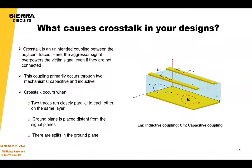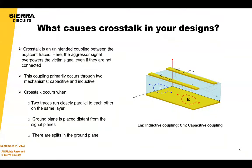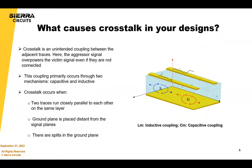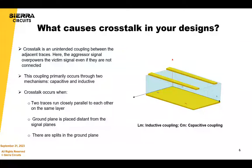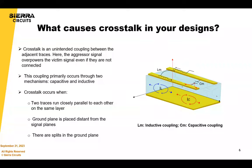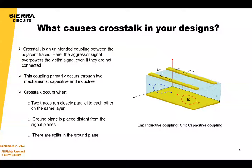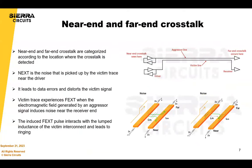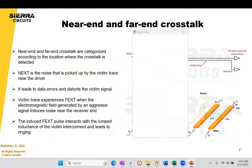Crosstalk is also caused when ground planes are placed distant from the signal planes and if there are any split planes or splits in your grounds. Yesterday I saw a design with 2-mil trace and space, all parallel lines. While the technology of manufacturing is impressive, I don't think it was a good design — everyone can learn from these things.